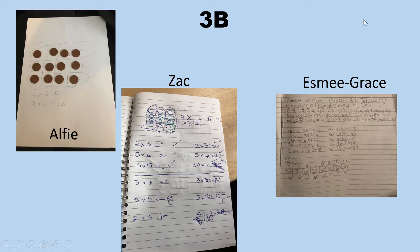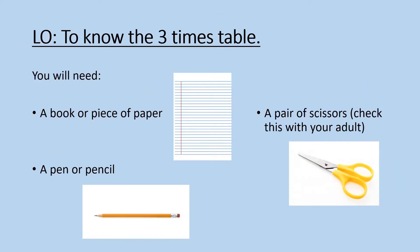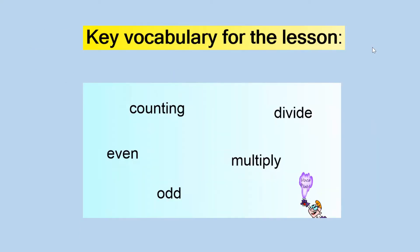Keep up the hard work. Our learning objective for today's lesson is to know the 3 times table. You will need a book or piece of paper, a pen or pencil, and a pair of scissors. Make sure you check this with your adult. The key vocabulary you will need for today's lesson is: counting, even, odd, divide and multiply.